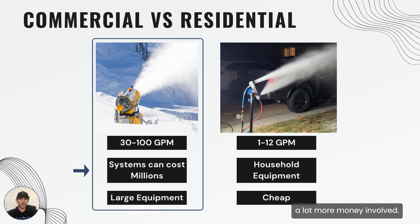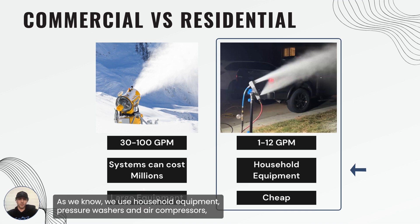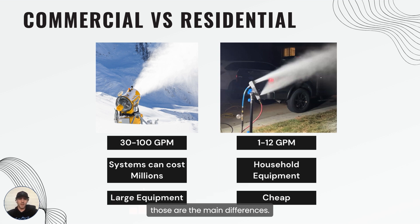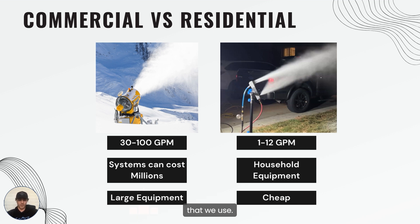Residential snowmaking uses household equipment — pressure washers and air compressors. Commercial systems have more features and more adjustment capability, while residential snow guns typically don't need that due to the smaller equipment involved.